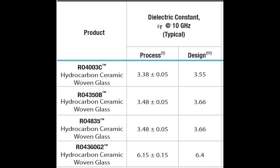Design dielectric constant, or design DK, is a little different — it's how the material performs in circuit form. We have the circuit made as a microstrip transmission line and use a microstrip differential phase length method to evaluate how the material behaves in circuit form with circuit influences. Design DK is really the right value to use for circuit design and circuit modeling; it is a circuit property of how the material behaves with circuit influences, not just a raw material property.